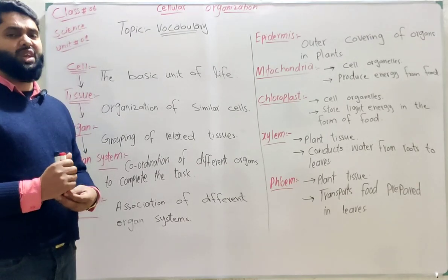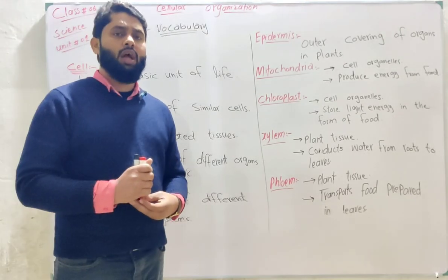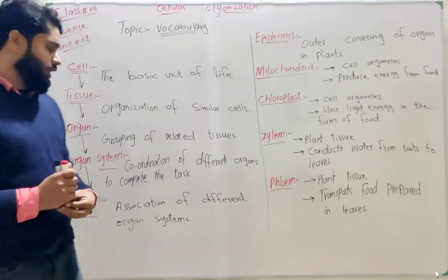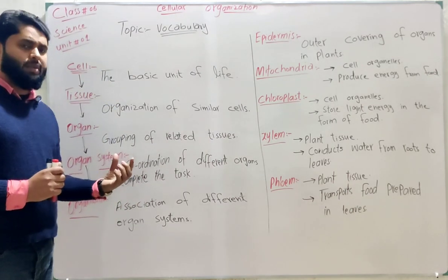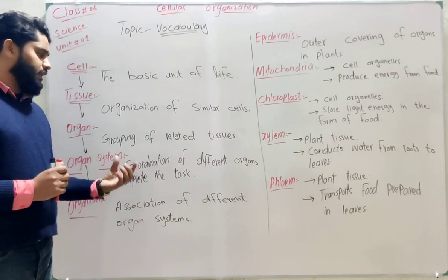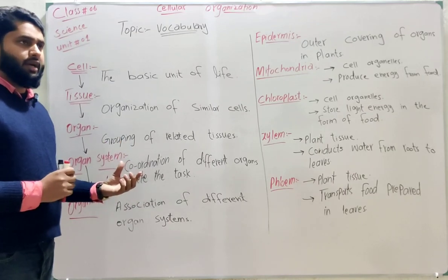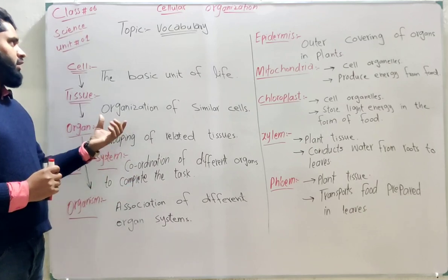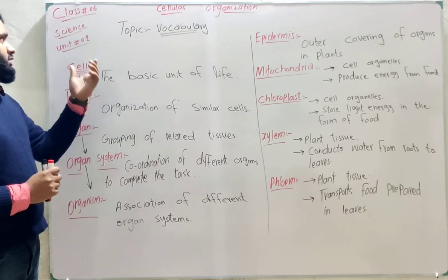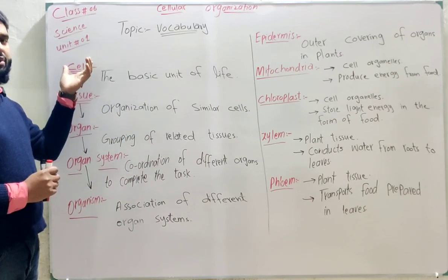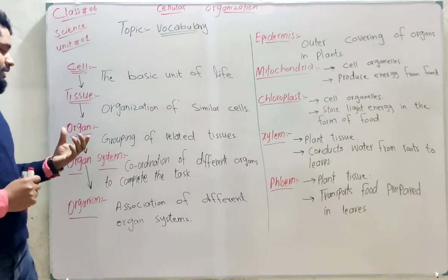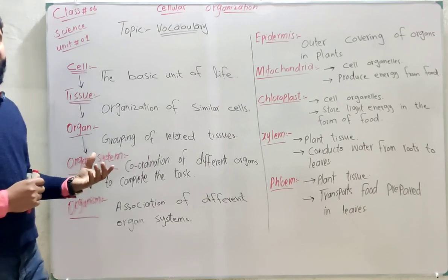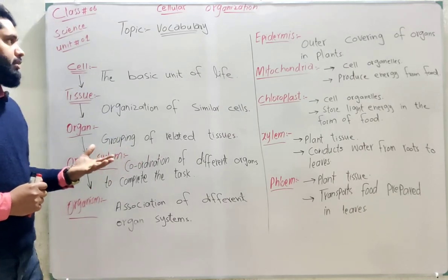The root system includes roots and root hairs. The shoot system includes the stem, branches, leaves, flower, and fruit. Due to this, all organ systems combine in coordination and work as an association, forming a single organism. In this first lecture, we saw the process in which cells combine to form tissue, tissue combines to form organ, organ combines to form organ system, and organ system combines to form an organism like a plant or animal. Thank you.